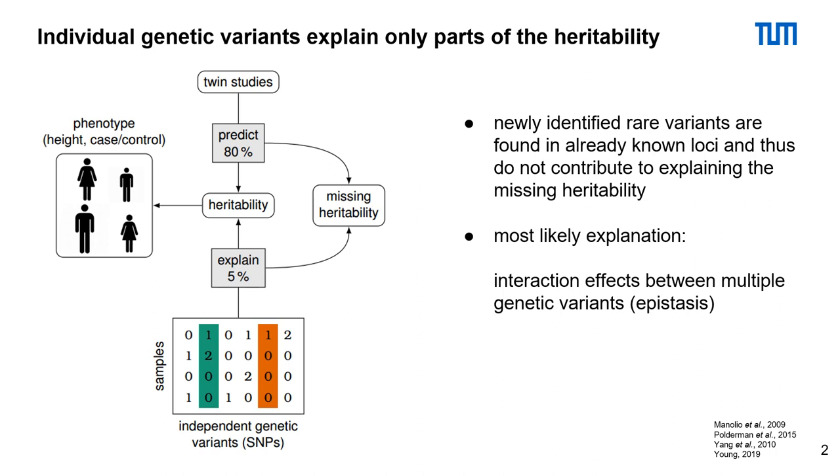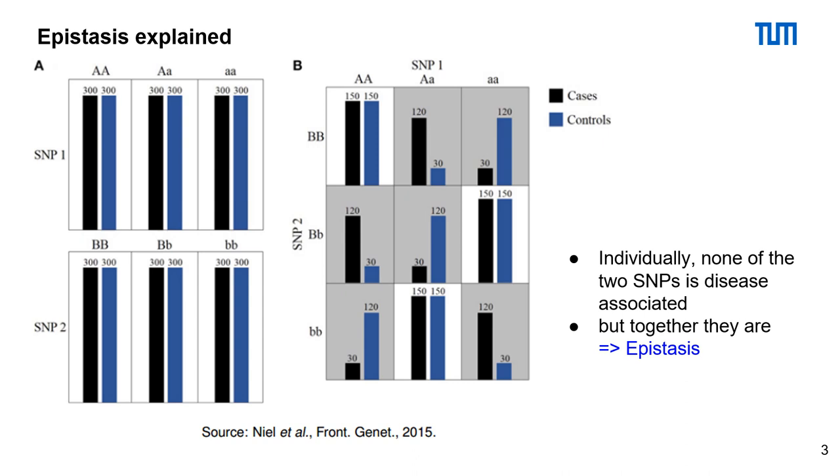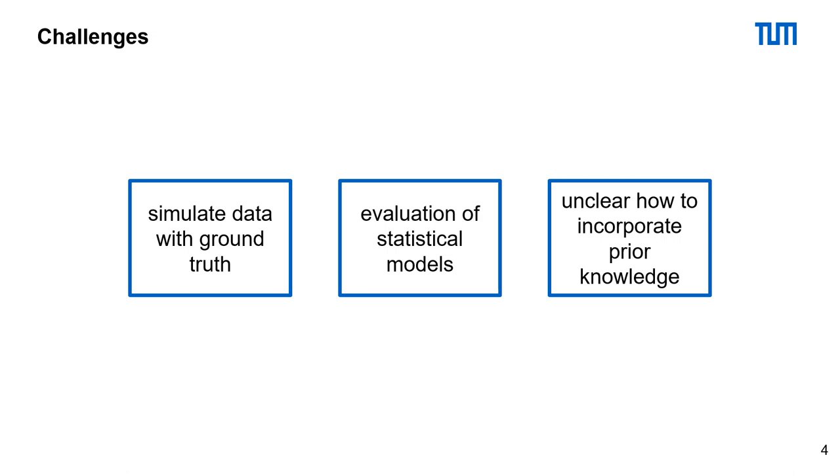Epistasis are interaction effects between multiple genetic variants. If we consider these two example SNPs separately, then we cannot observe any differences between case and control samples. But if we look at them together, we can. This means together we can associate these SNPs with the disease.